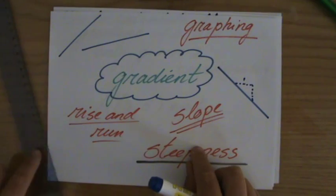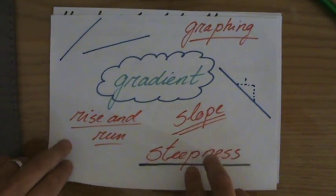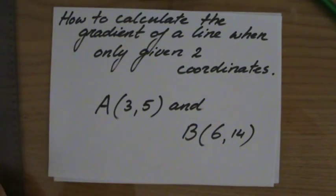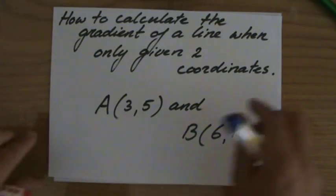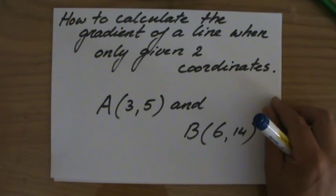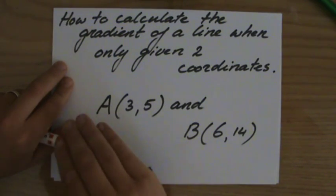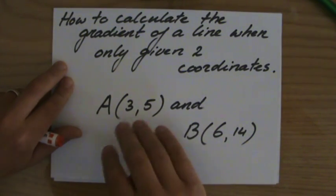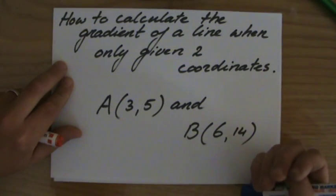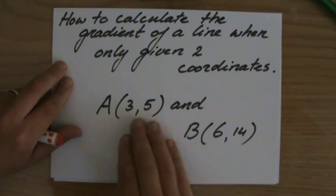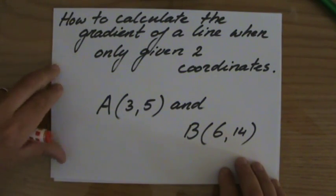So make sure you've seen my previous videos before you continue now, because the questions you will get, and they become relatively easy if you understand. Gradient is, now you have to calculate the gradient, and they only give you two coordinates. So calculate the gradient of the line that goes through the following two coordinates. A, 3 and 5. B, 6 and 14.